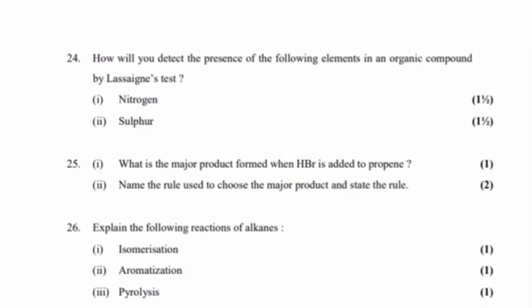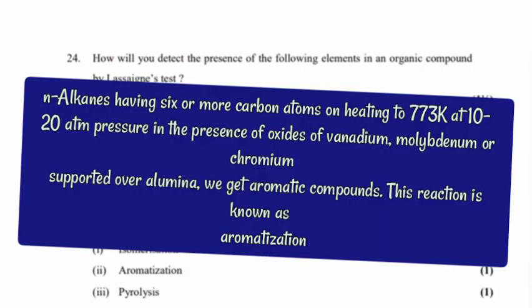Part 2: Aromatization. Answer: n-alkanes having six or more carbon atoms on heating to 773 Kelvin at 10 to 20 atm pressure, in the presence of oxides of vanadium, molybdenum or chromium supported over aluminum, we get aromatic compounds. This reaction is known as aromatization.